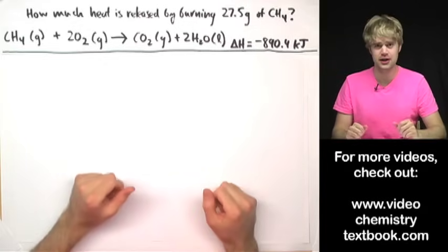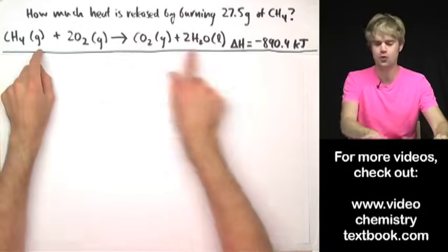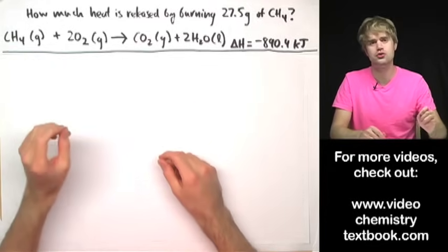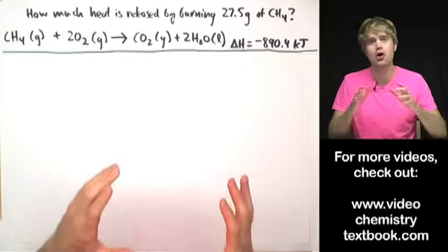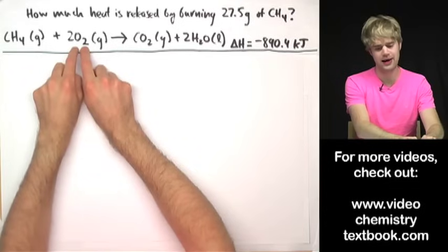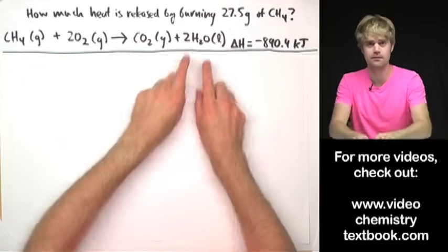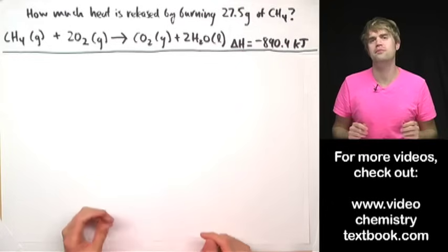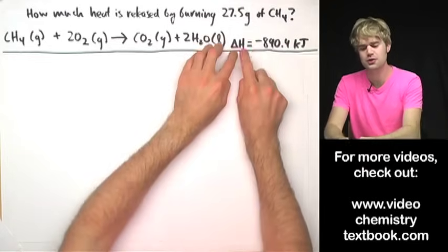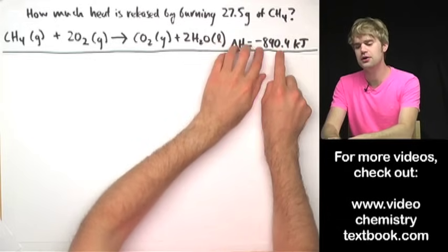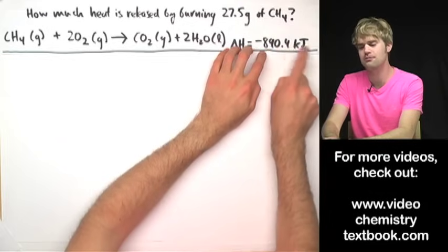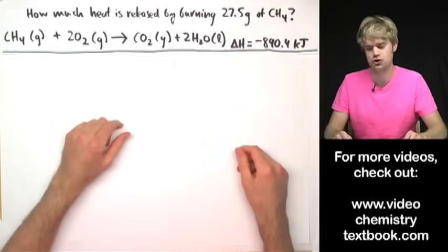I'm going to show how to calculate how much heat is released or absorbed with chemical equations. Here I have a chemical equation that shows what happens when methane, also known as natural gas, burns in the air. Methane, CH4, combines with oxygen to make carbon dioxide and water. If you burn methane it releases a ton of heat, and that's what this delta H is. This number, 890.4 kilojoules, tells us how much heat we're dealing with — kilojoules is the unit we use to measure heat.